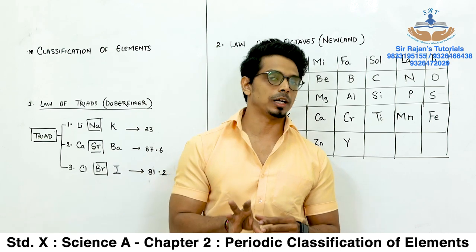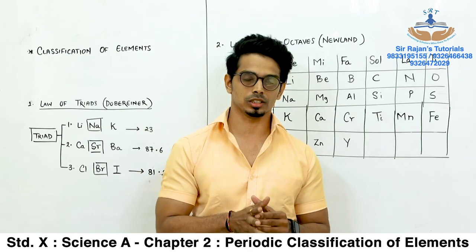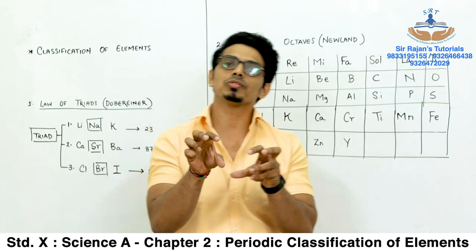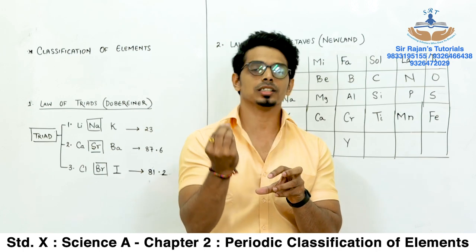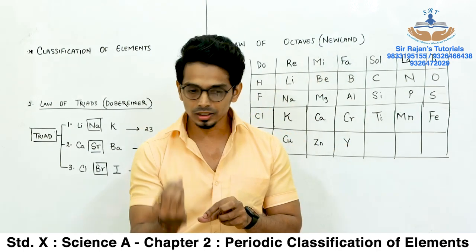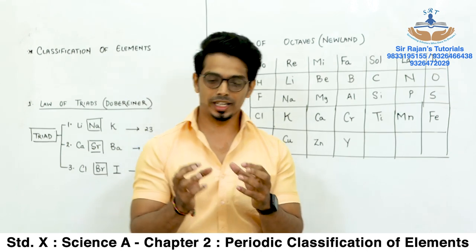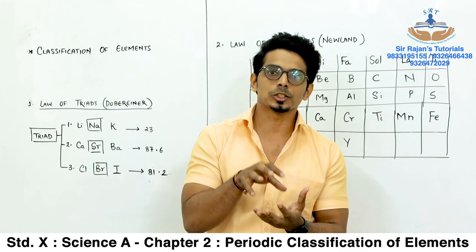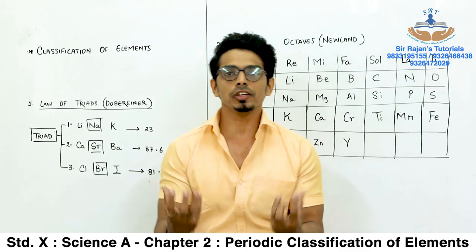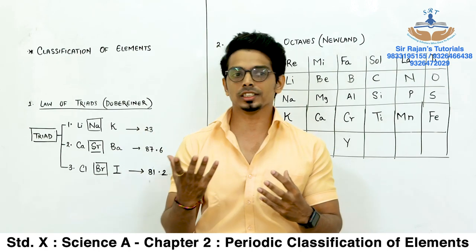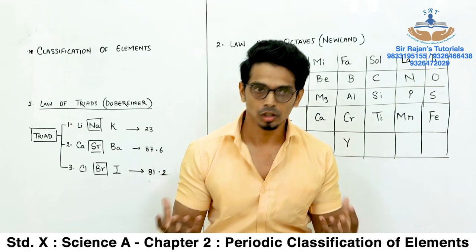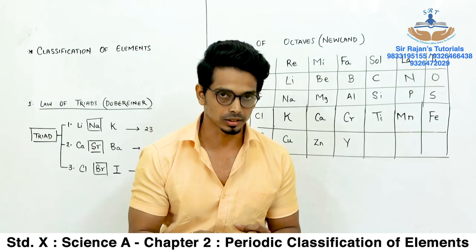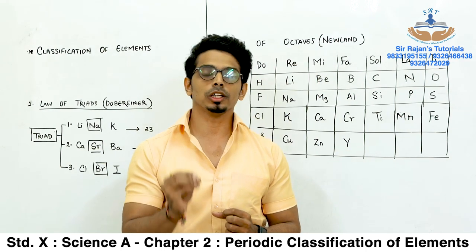When we talk about the chapter name, periodic classification of elements, we are going to try to understand the name of the chapter. First we will try to understand something very basic — elements in the subject of chemistry. Now if someone asks you what is matter, my immediate reply is: any substance that has mass, that occupies space, and that can be perceived through our senses. For example, air is also matter — we can't see it but we can feel it.